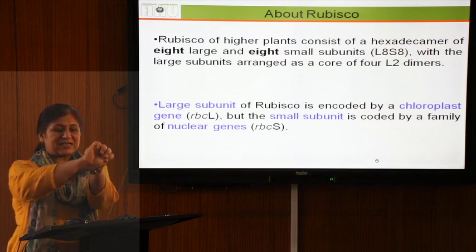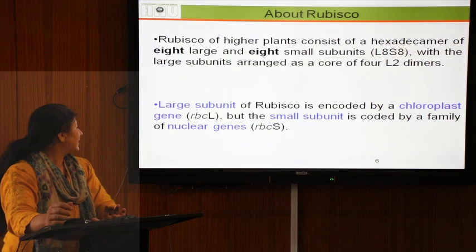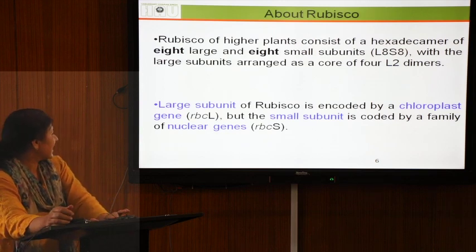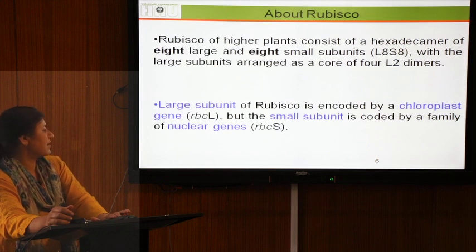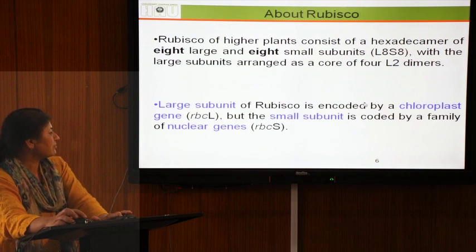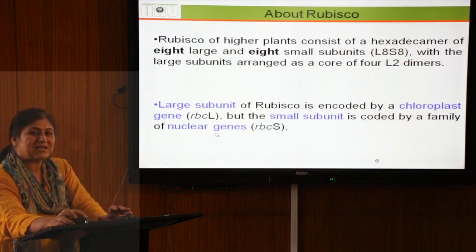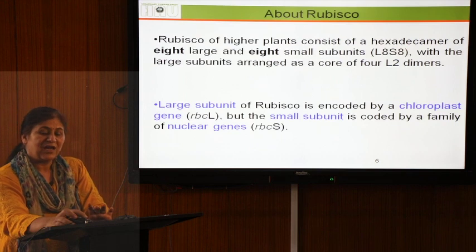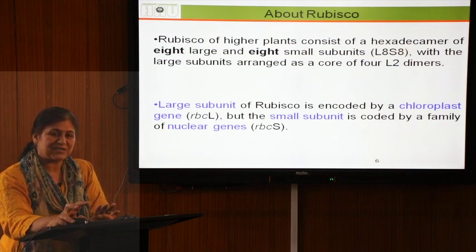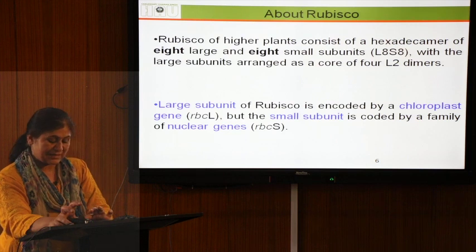The large subunit of rubisco is encoded by the chloroplast gene, while the small subunit is encoded by the nuclear gene. Both are essential — the fusion of both the large and small subunits is required for rubisco to be functional. We cannot assume that the large subunit alone is sufficient; both are required.